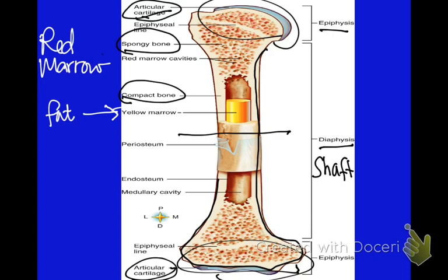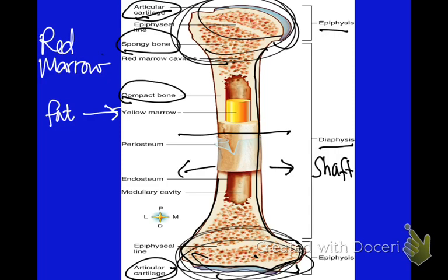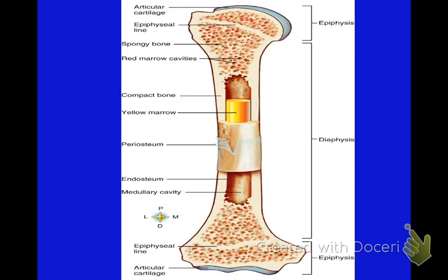Proximal, medial, lateral, distal — this is the proximal end of the bone, closer to the trunk of the body; the bottom end is the distal end, which is the knee. Medial is toward the midline of the body, lateral is away from it — this is your compass rose to give you directional terms. The periosteum is a membrane that covers the surface of the whole bone, and the inner layer is called the endosteum.